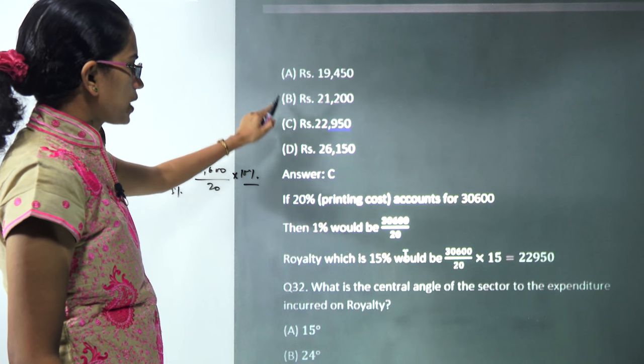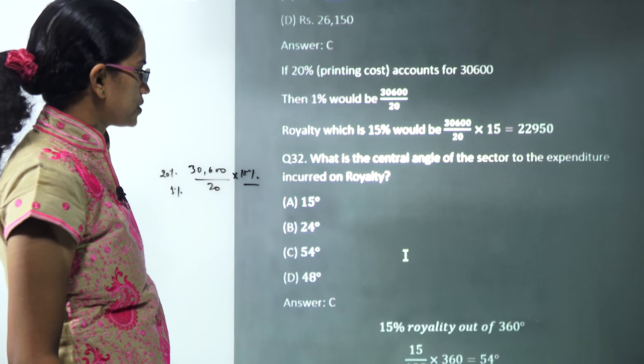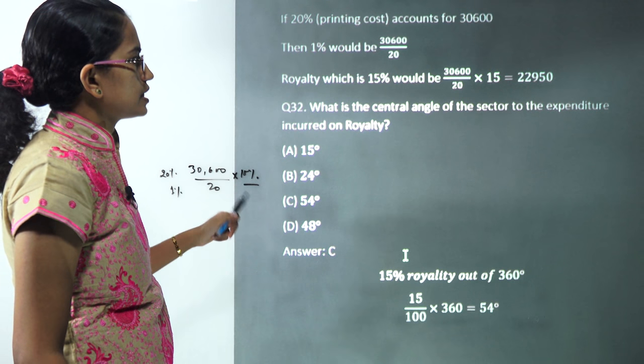You would have 22,950 as the correct option for the first question.